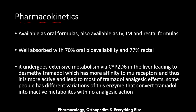Regarding pharmacokinetics, tramadol is available as oral, intravenous, intramuscular, and rectal formulas. It is well absorbed orally with a bioavailability of about 70%, and rectal bioavailability is about 77%. Intramuscular and intravenous bioavailability is 100%. It undergoes extensive metabolism via CYP2D6 in the liver, leading to desmethyl tramadol, which has greater affinity for mu receptors.